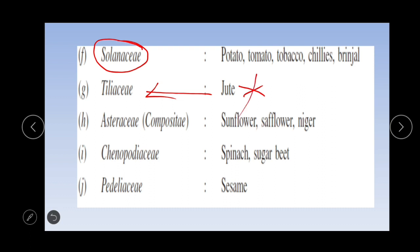Sunflower, safflower, and niger belong to Asteraceae, i.e. Compositae family. Spinach and sugar beet belong to Chenopodiaceae, and sesame belongs to Pedaliaceae family.